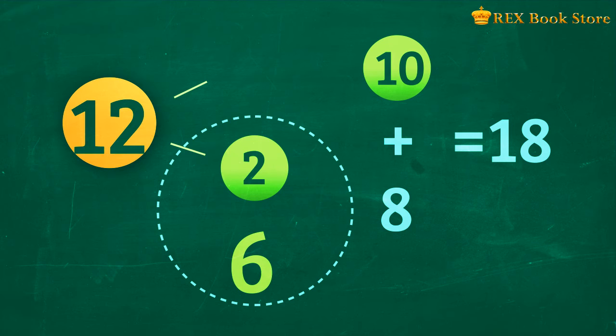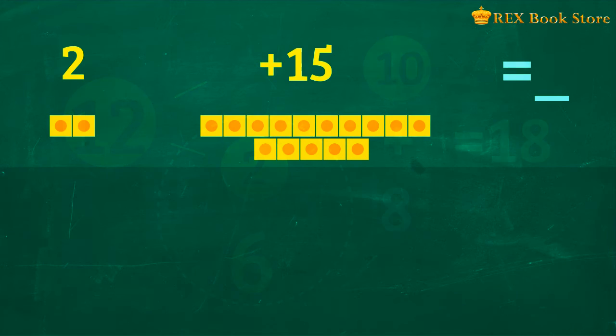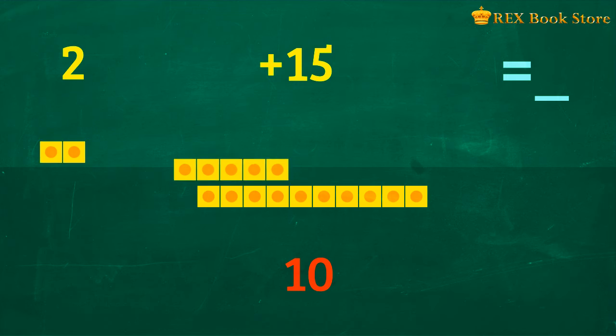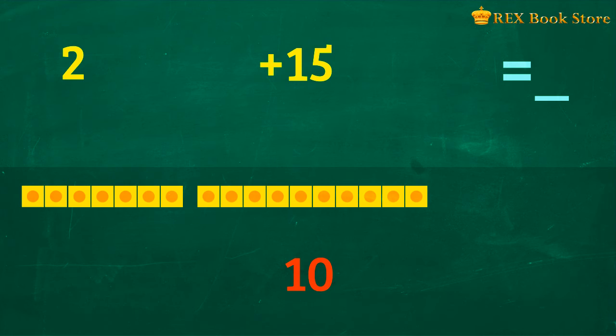Did you get it? Let's try another example. 2 plus 15 is equal to how many? Remember, we need to regroup the bigger number to make 10. How many units are left? There are 7 units. So 2 plus 15 is equal to 17.